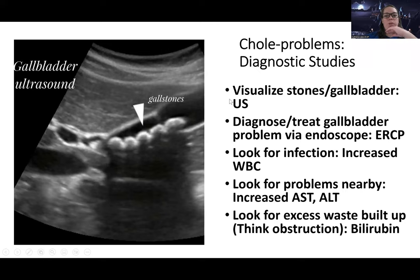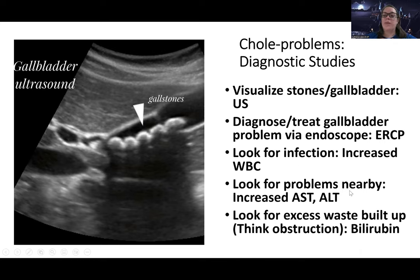For diagnostic studies, we usually do an ultrasound — when looking at individual organs, ultrasound is usually best. Sometimes we do an ERCP, which is an endoscopic procedure, and we can actually diagnose or treat some gallbladder problems this way. We'll also look for infection with an increased white blood cell count, check how the liver is being affected by checking AST and ALT, and look for bile obstruction by checking bilirubin levels.